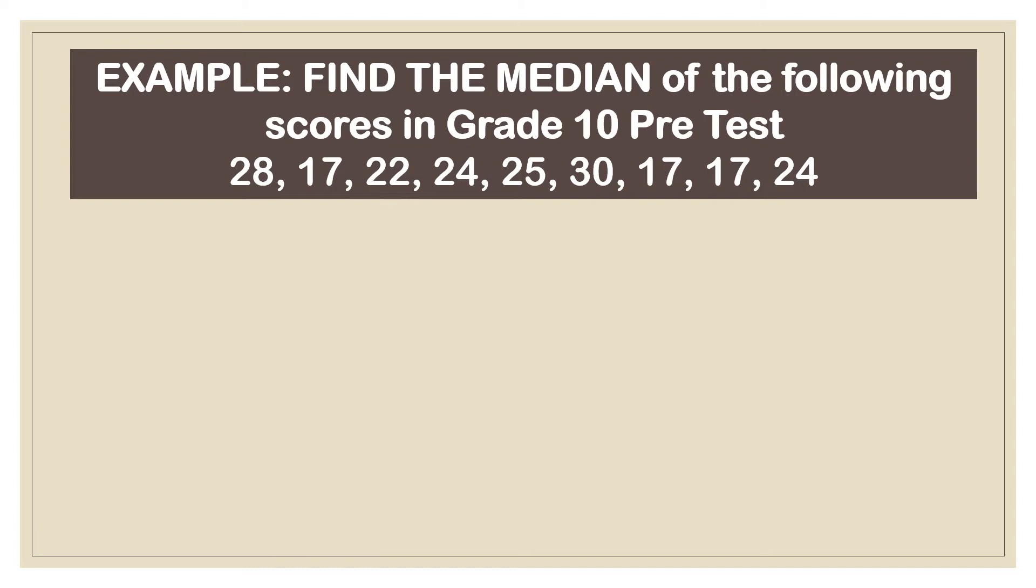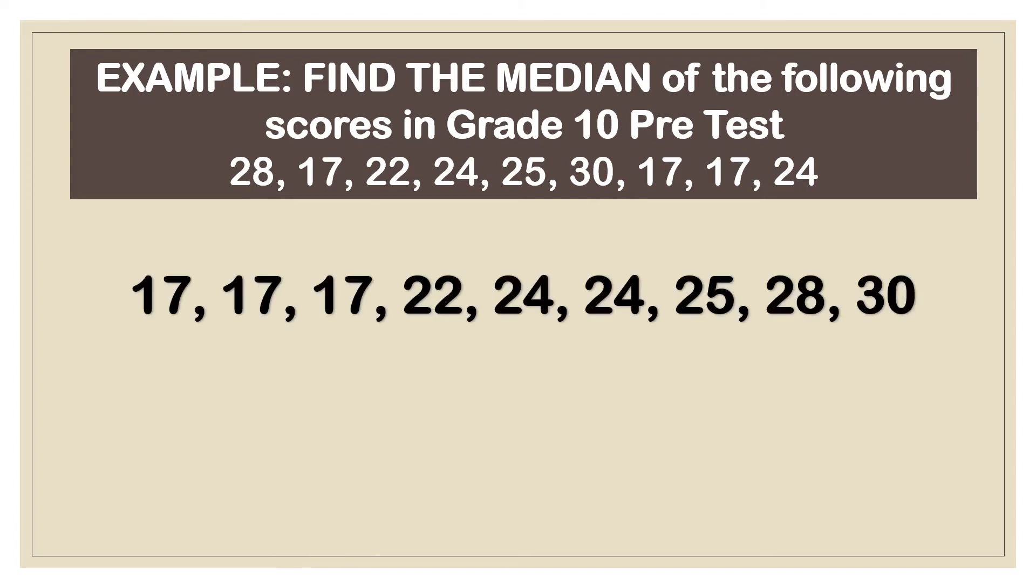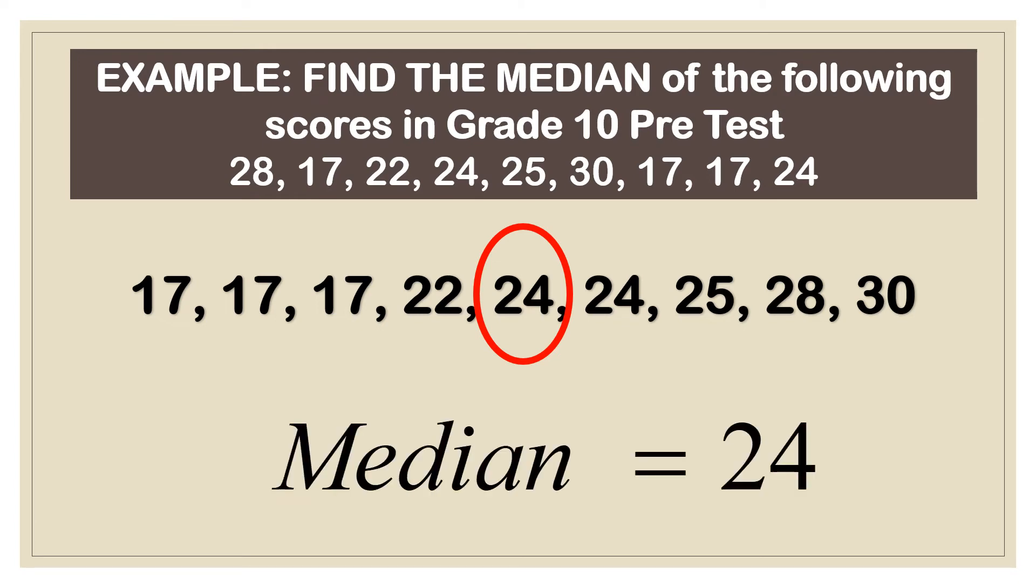Example number 1, find the median of the following scores in the grade 10 pre-test. If you look at those numbers, they are not arranged. So it would be better if you arrange the numbers from the lowest score to the highest score, and then find the center. So if there's only one number in the middle, it's easier to tell which the median is. So the median in this set of scores is 24.